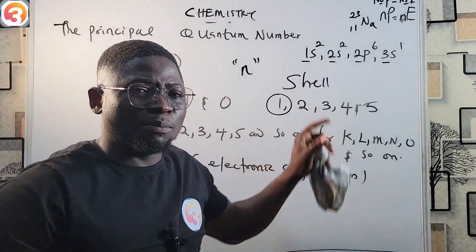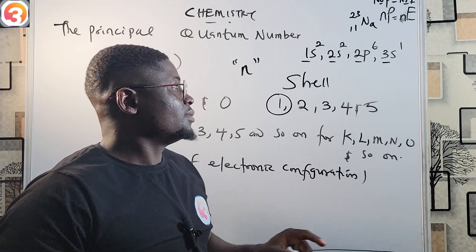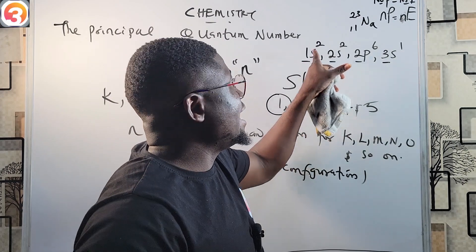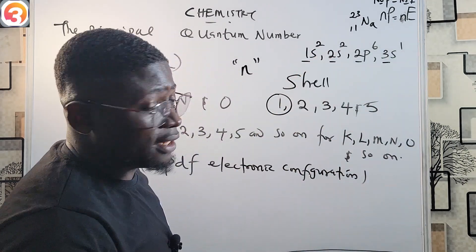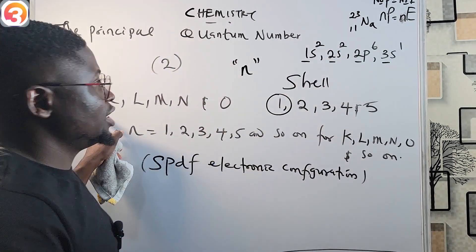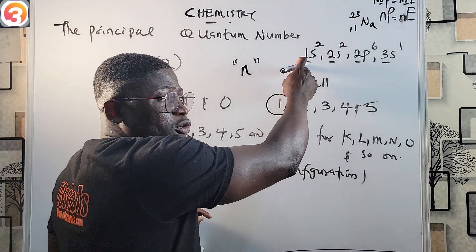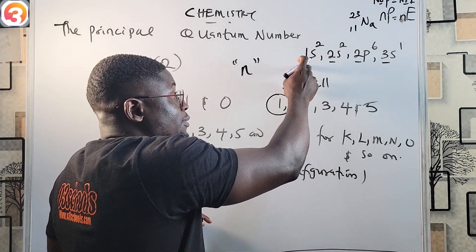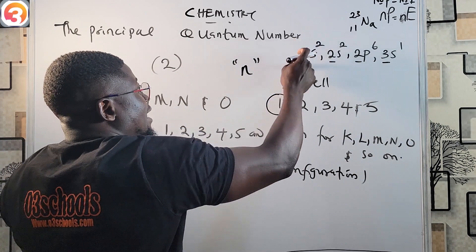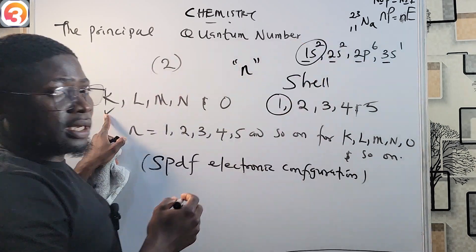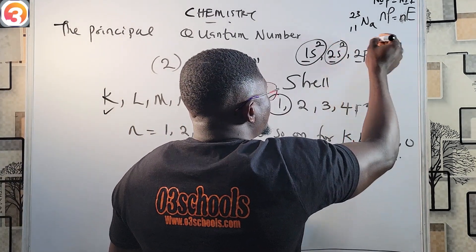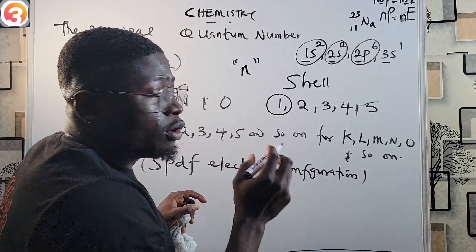The numbers 1, 2, and 3 underlined in the configuration correspond to the principal quantum numbers. The first two electrons — 1s² — belong to the K shell, because principal quantum number 1 corresponds to the K shell.